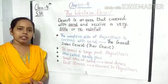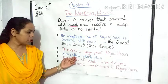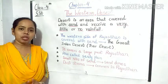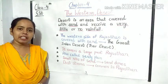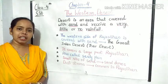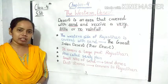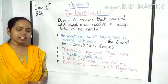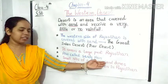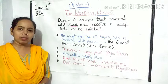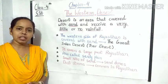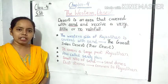It is also called Sandy Plains. Small hills of sand are known as sand dunes.